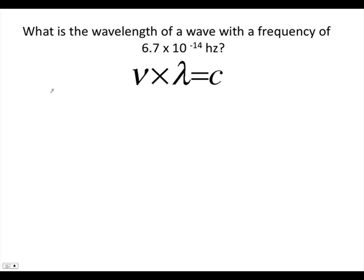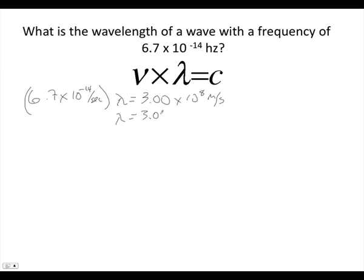I'm looking for the wavelength, and I know the frequency. The frequency is 6.7 times 10^14 hertz, or per second. I'm going to multiply that by lambda, or the wavelength. And that equals the speed of light, 3.0 times 10^8 meters per second. To solve for lambda, I have to divide both sides by the frequency. And I come up with an answer of 4.48 times 10^-7 meters.